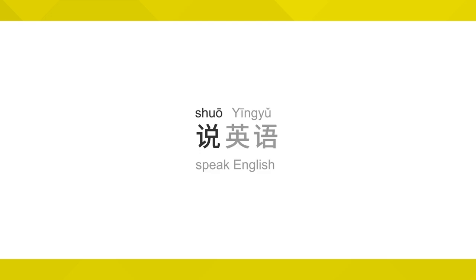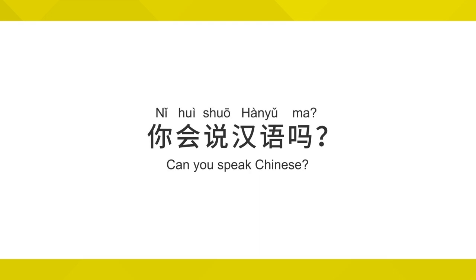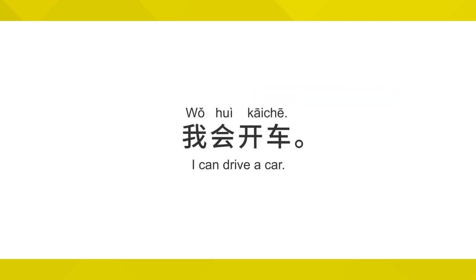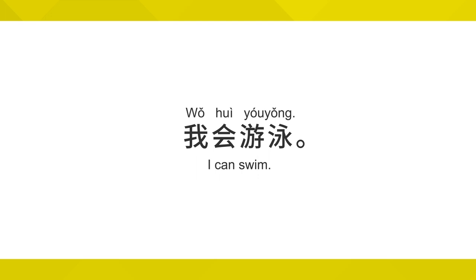How about English? 说英语。 Great. And 你会说汉语吗？ 会 is the most important word we're looking at today. The way we use it is 会 plus a skill. A skill is something that takes training or learning. For example, 'I can drive' or 'I know how to drive' — 我会开车。 开车 is to drive a car. Or, 'I can swim' or 'I know how to swim' — 我会游泳。 游泳 means to swim.